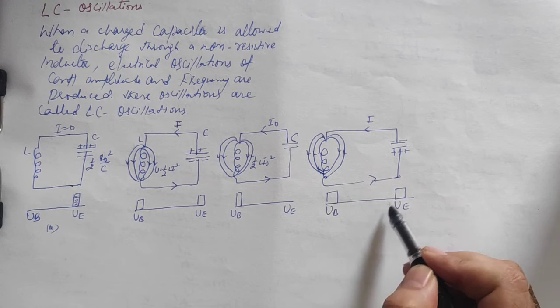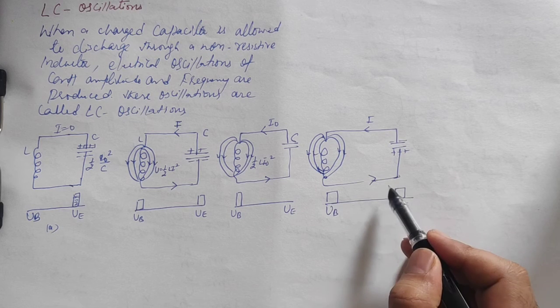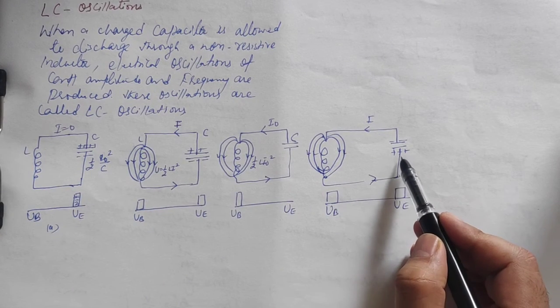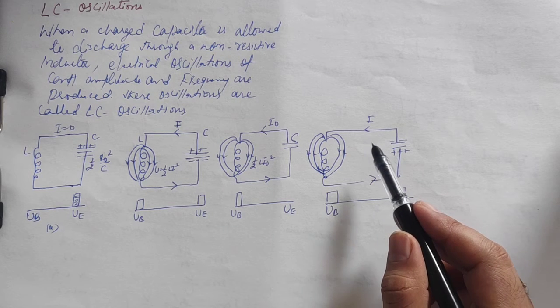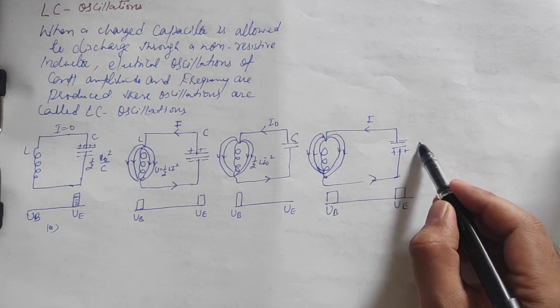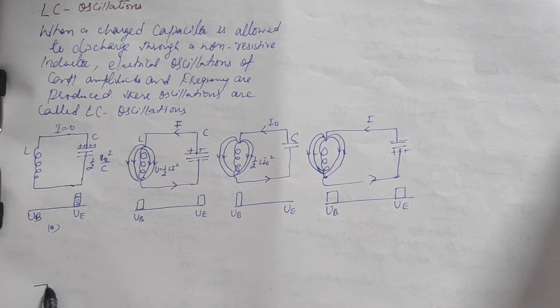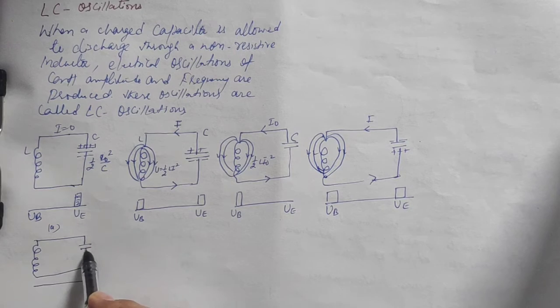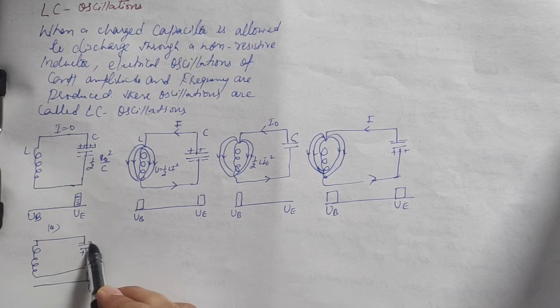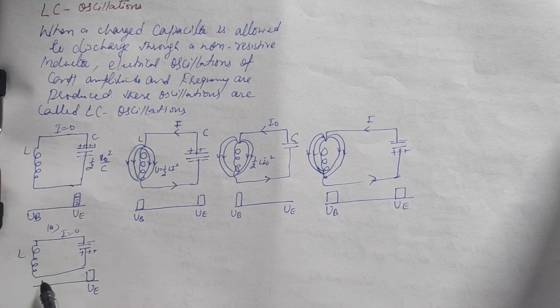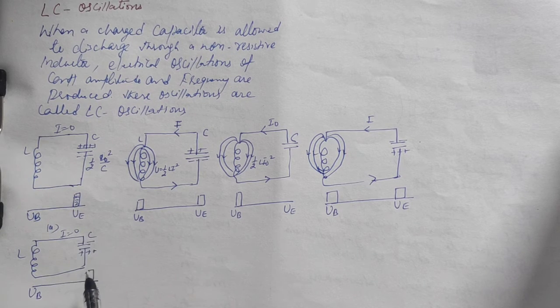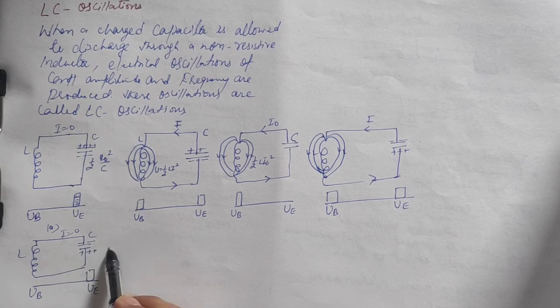The magnetic energy changes back into electrostatic energy of the capacitor. This process continues, with energy converting back into electric energy and charging the lower plate. The entire energy is again stored as half Q₀²/C. The capacitor is now fully charged in the opposite polarity.